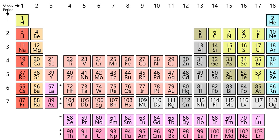Atomic radii vary in a predictable and explainable manner across the periodic table. The radii generally decrease along each period of the table, from the alkali metals to the noble gases, and increase down each group. The radius increases sharply between the noble gas at the end of each period and the alkali metal at the beginning of the next period. These trends can be explained by the electron shell theory of the atom and provided important evidence for the development and confirmation of quantum theory.